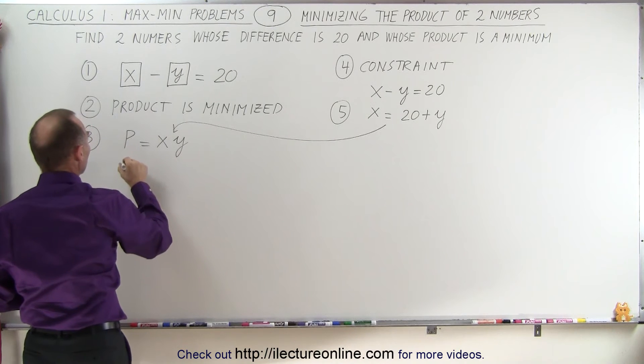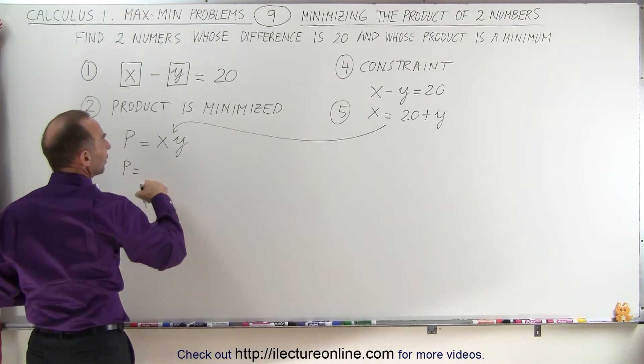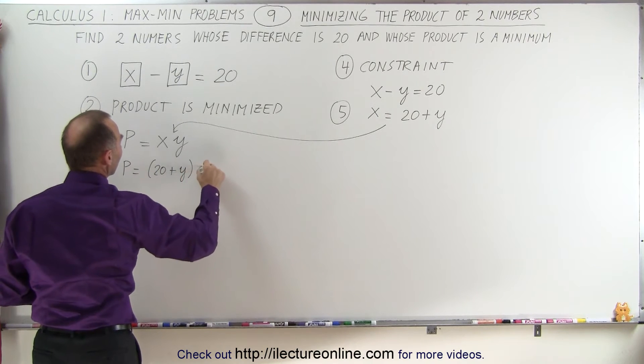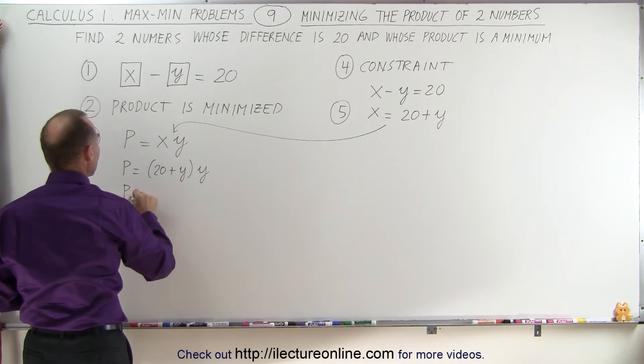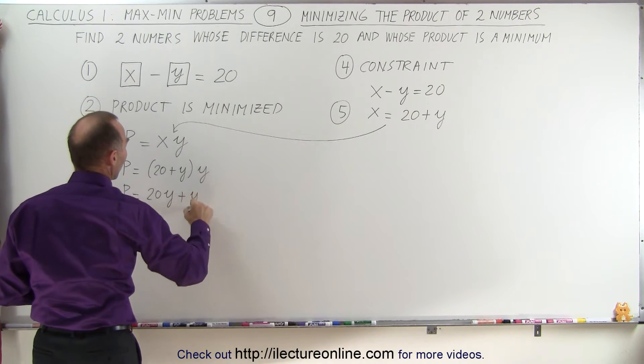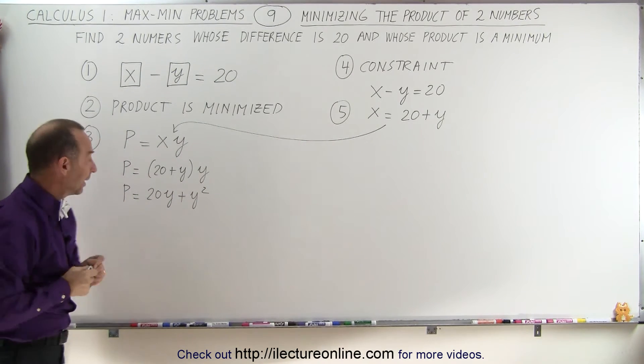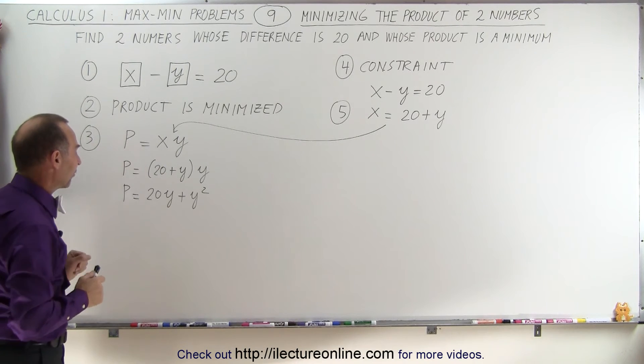And we get the new equation that the product now is equal to, instead of X, we write 20 plus Y times Y, which means that P is equal to 20Y plus Y squared. Now we have the equation for the product in terms of just a single variable.